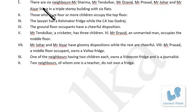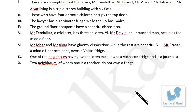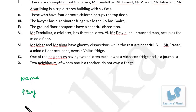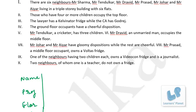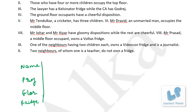Final puzzle: six neighbors — Mr. Sharma, Tendulkar, Dravid, Prasad, Johar and Iyer — live in a triple-storey building with six flats, two per floor. Variables: name, profession and floor — plus fridge brand. Those with four or more children occupy the top floor. The lawyer has a Kelvinator fridge and the CA has a Godrej.